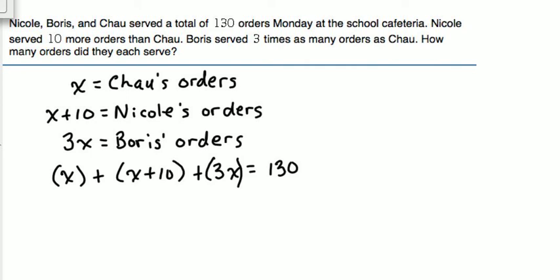So what we're going to do in order to add up everything on the left side of the equation is combine like terms. 1X plus 1X plus 1X plus 3X adds up to 5X, giving us 5X plus 10 equals 130.